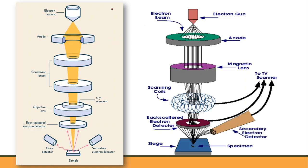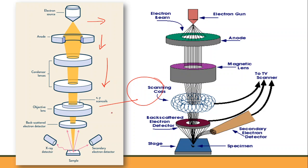In the SEM setup, the electron gun produces the electron beam by heating a tungsten wire with current. This beam is accelerated by the anode, then travels through electromagnetic fields and lenses which focus the beam toward the sample. Scanning coils then deflect the beam so that it scans across the surface of the sample in a rectangular frame.